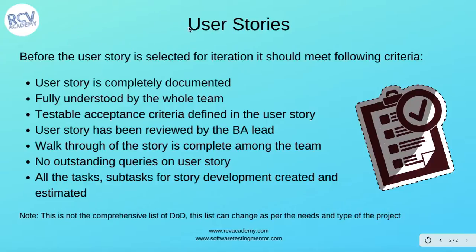Before the user story is selected for iteration, it should meet the following criteria. When we say definition of done for the user story, the user story has to meet certain criteria before it can actually be picked in the iteration. So what are some of the definition of done criteria that can be defined at the user story level? The first thing could be that the user story is completely documented before you can actually pick it up in your iteration.